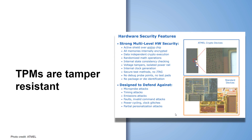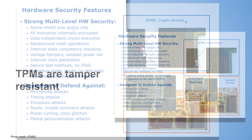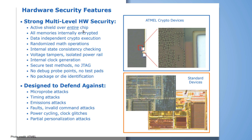Because TPM implementation is typically a discrete chip on a motherboard or device, it must be tamper resistant. TPMs have active shielding over the entire chip. All memories are internally encrypted, with randomized math operations, internal state consistency checking, voltage tamper isolation, power rails, internal clock generation, and more. These are hardened physical devices that provide a root of trust.